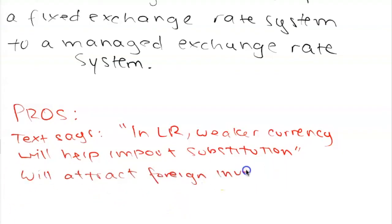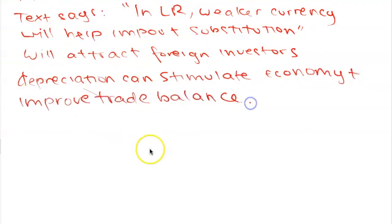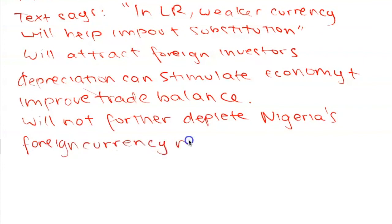Another pro that the text mentions is that it will increase foreign investment. This is because if there's less government intervention to devaluate the currency, then foreign investors can be sure that if they put their money in the banks, the exchange rate is going to stay high. Another benefit is that if you remember in the first paragraph, there's a mentioning of how the central bank is running out of foreign exchange reserves. If we move to less central bank interference, then the central bank won't have to have such a high reserve of foreign exchange reserves to constantly be influencing the value of the currency.